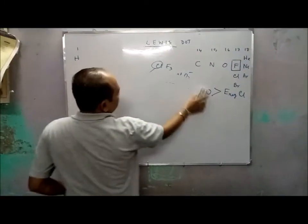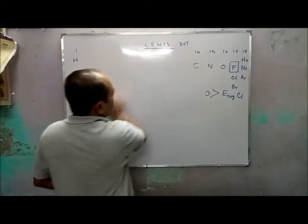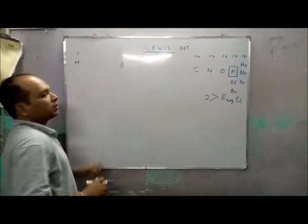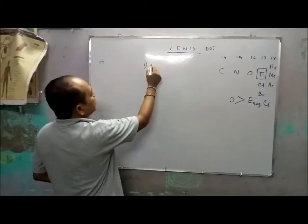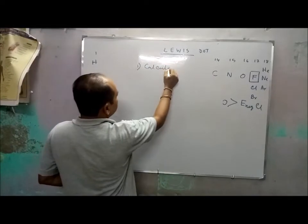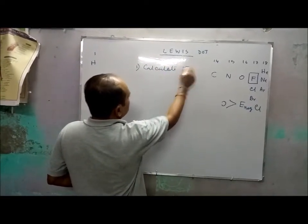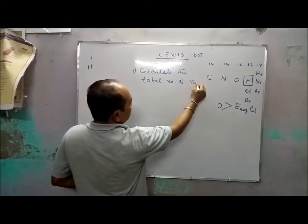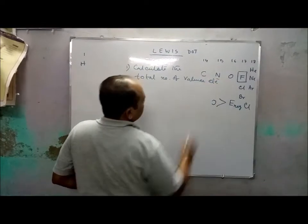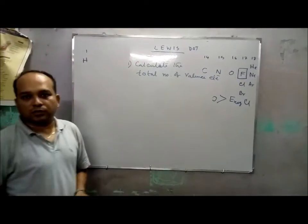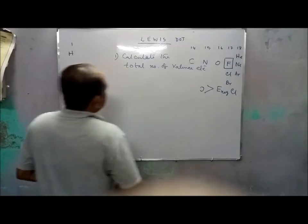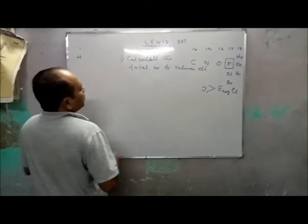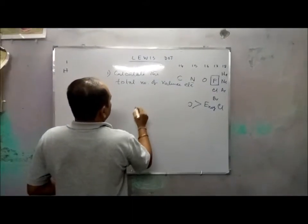Now we try to draw a basic Lewis dot structure. Step one is to calculate the total number of valence electrons. Let us try to draw the structure of SO2 (sulfur dioxide).